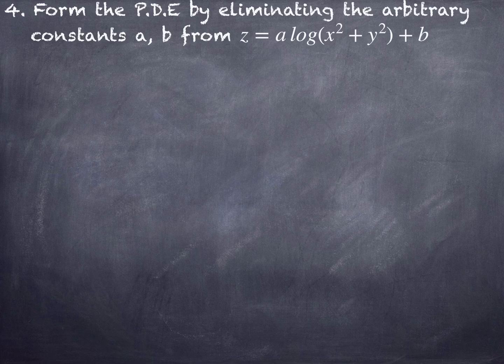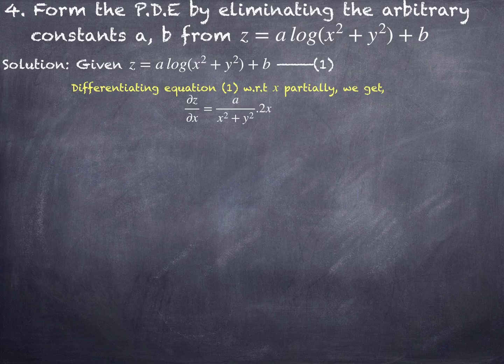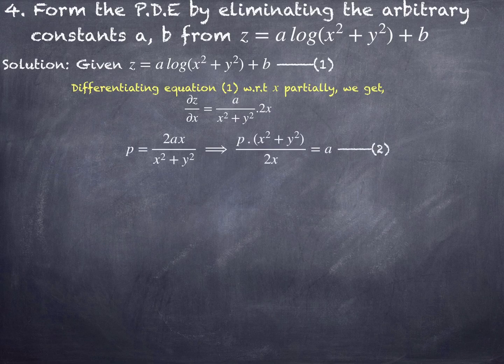Moving to the next problem: form the PDE by eliminating the arbitrary constants a and b from z equals a·log(x²+y²) plus b. Call the given equation number 1. Differentiating partially with respect to x: ∂z/∂x equals a times (1/(x²+y²)) times 2x. Since there are only 2 constants, first-order partial derivatives are sufficient.